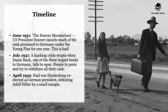In July 1931, a banking crisis erupted when Danat Bank, one of Germany's largest banks, failed to open and people panicked, withdrawing all their cash. In April 1932, President von Hindenburg was re-elected as German president, defeating Adolf Hitler by a small margin. Notably, during the golden years Hitler had been seen as a marginal figure, but he was now growing significantly in support among Germans.